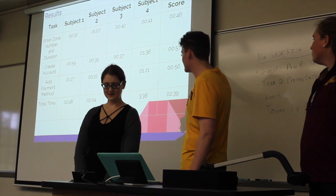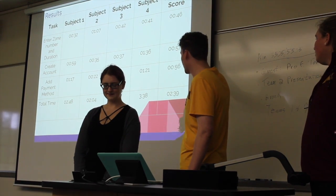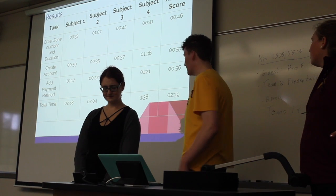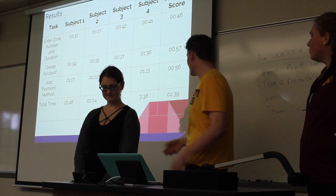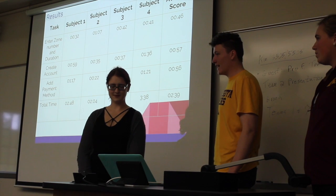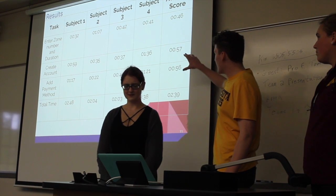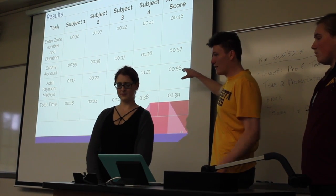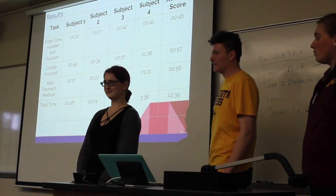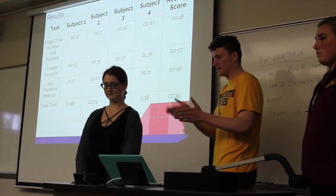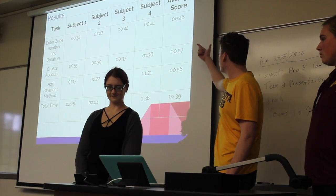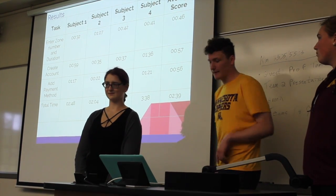The average time for entering your zone number and duration is 46 seconds. It takes about a minute to create your account, another minute to add your payment method. So the first time you use the app takes 2 minutes and 40 seconds. The second time — since you don't need to create an account or add a payment method — it takes just under a minute, about 46 seconds to park your car.